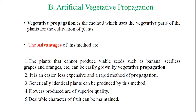We all know there are four types: cutting, layering, grafting, and budding. Today, with artificial methods of vegetative propagation, we will also add tissue culture technology. So these are the four or five types of the artificial methods of vegetative plant propagation.